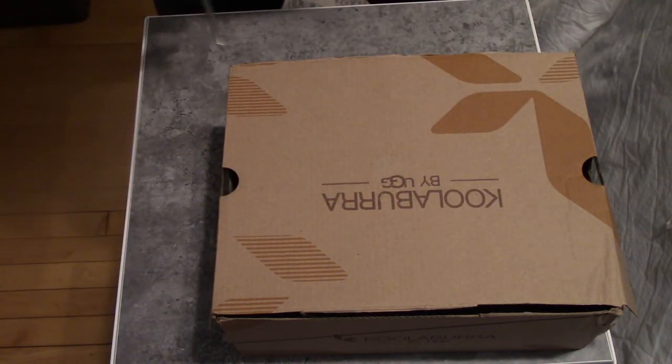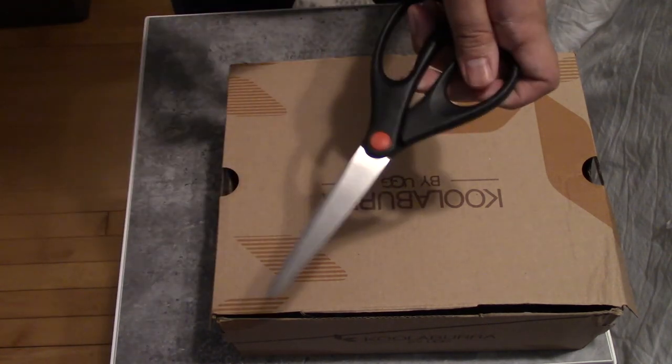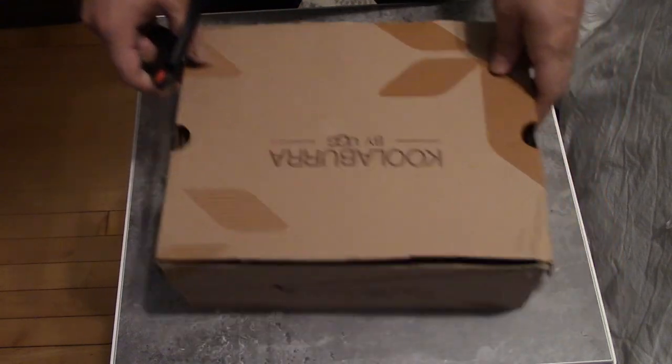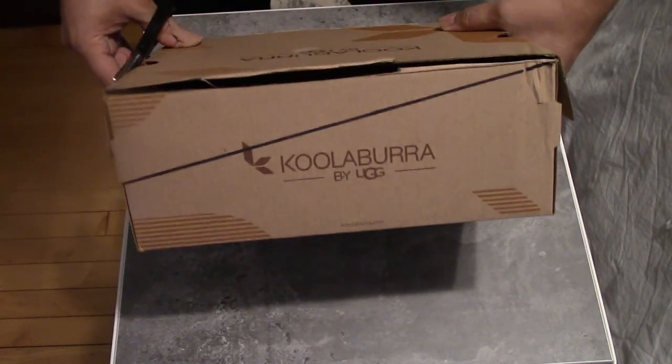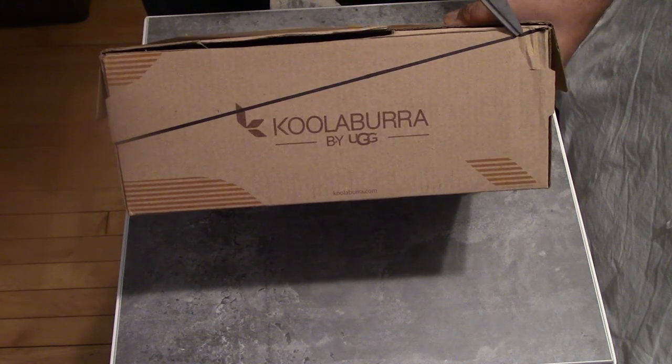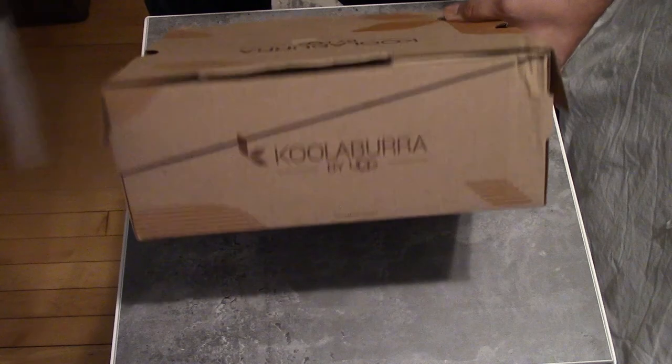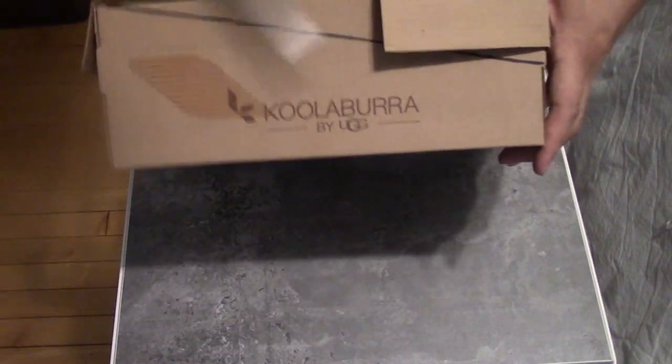Okay so step one you're going to grab one more material item that I forgot to mention, scissors, and your box and you're going to go ahead and make a diagonal line that goes across your box. Just like this. I drew my line beforehand. You're going to want to do that again on the other side here.